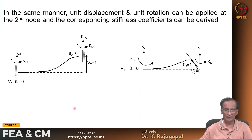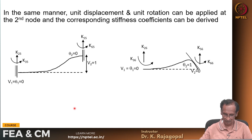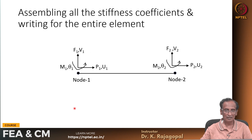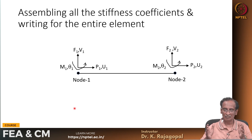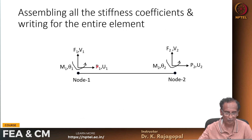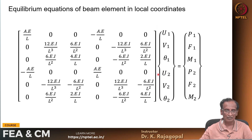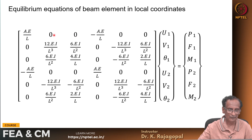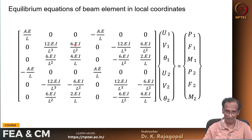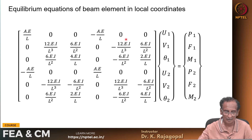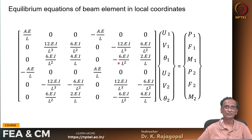Similarly, applying unit deformations at node 2 gives the remaining coefficients. Assembling all equations, we write the element equilibrium equations in local coordinates relating forces P1, V1, M1, P2, V2, M2 to displacements. Axial forces are not affected by shear or rotation, and vice versa. This is the complete stiffness matrix for the beam element in local coordinates.